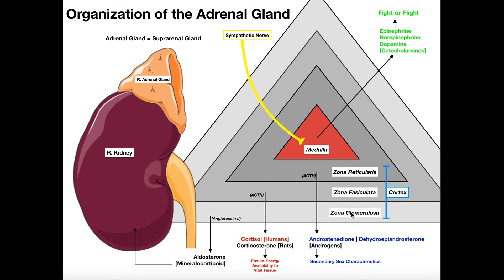So the cortex and medulla are very different. The medulla is controlled through nervous tissue — the sympathetic nerve — and activated through action potentials. All three cortex regions are activated in response to a hormone, since they're endocrine tissue. The zona reticularis and zona fasciculata release in response to ACTH, whereas the zona glomerulosa releases aldosterone in response to angiotensin 2. All three cortex regions are examples of hormone-induced hormone release.